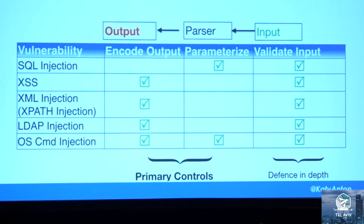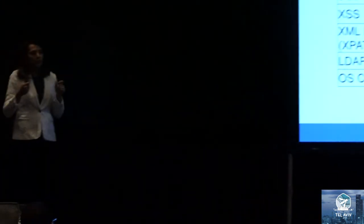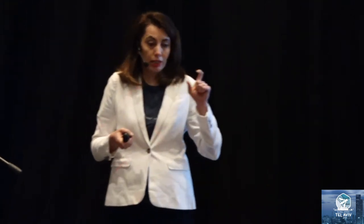Rather than focusing on all these types of injection, which can be quite overwhelming, we can choose to focus as a primary control on always parameterizing the data. If that's not available, contextually encode the output to neutralize the characters that can trigger the injection. As defense in depth, we still have to validate the input — this helps reduce the attack surface and is most efficient when done at the point where data enters the application. In MVC, that point is the controller. By doing both consistently, we are able to prevent vulnerabilities that developers might not be aware of.